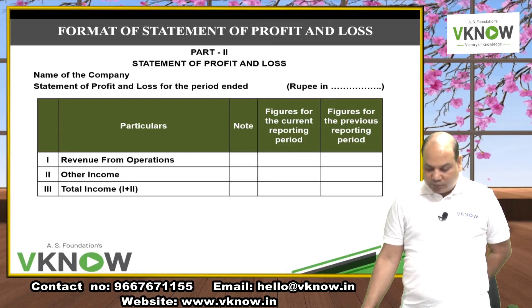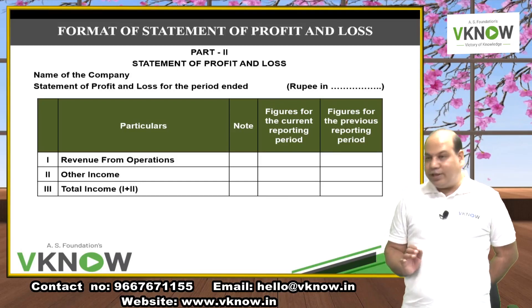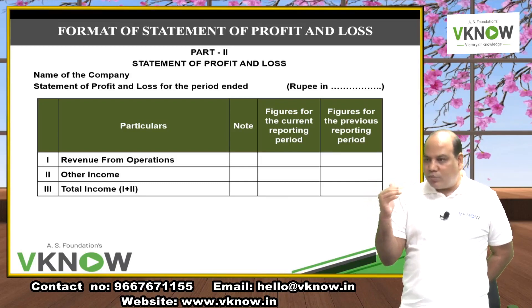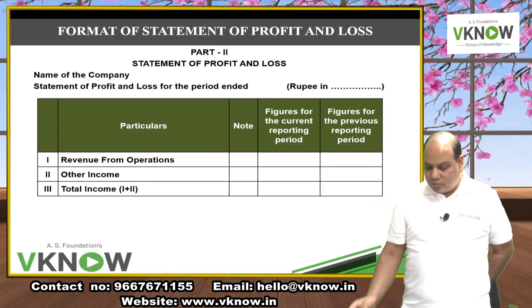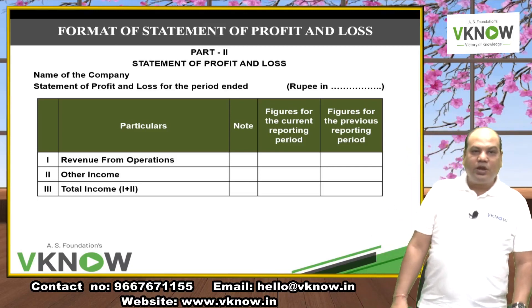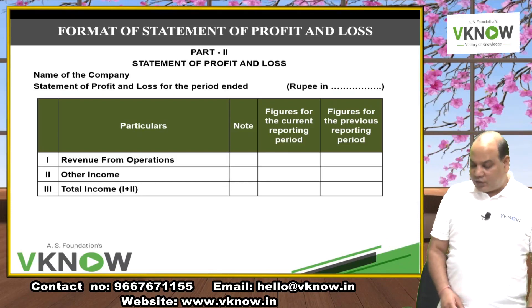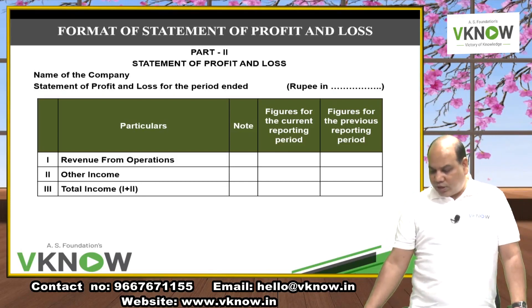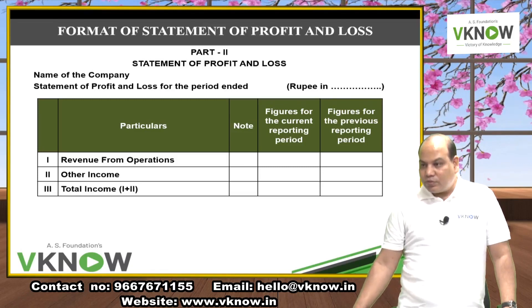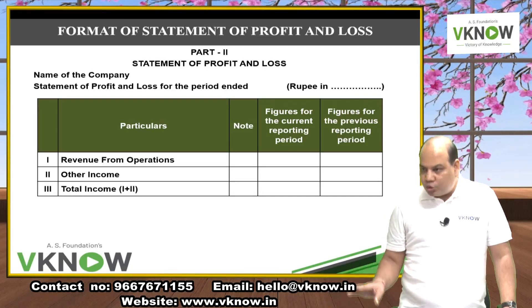The format includes columns for rupees in thousands, lakhs, or millions as required. It has Serial Number, Particulars, and Note Number columns. The main P&L only shows headings and final totals; details go in the notes. There are two columns: figures for the current reporting period and the previous reporting period.